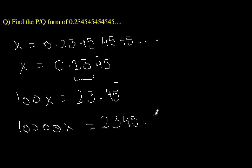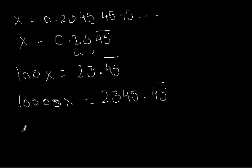This is 2345.45 bar, and once again the 45 is in the recurring part. Now we subtract 100x from 10000x.